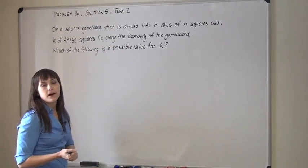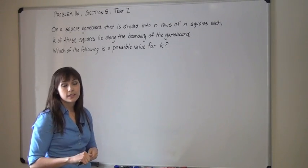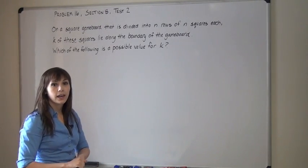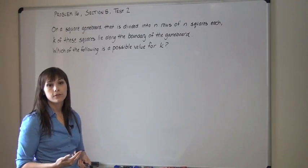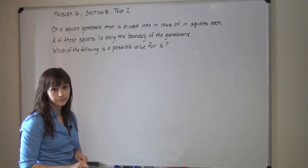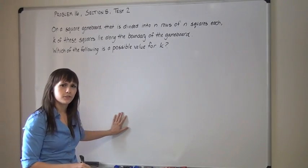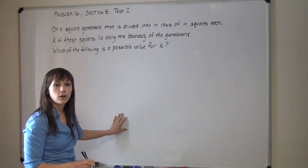Well if you need to find a possible value for k, we're going to need to learn some more information about k, the number of squares that lie on the boundary of an n by n game board. This is definitely easier to work with visually, so let's draw a game board.